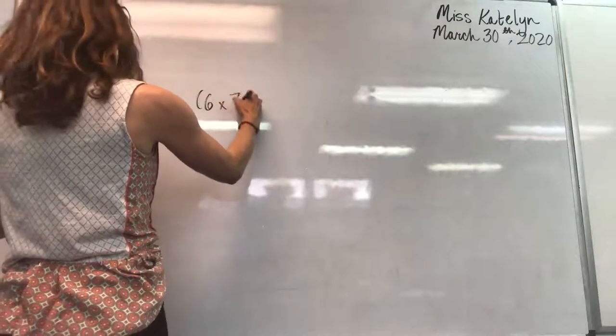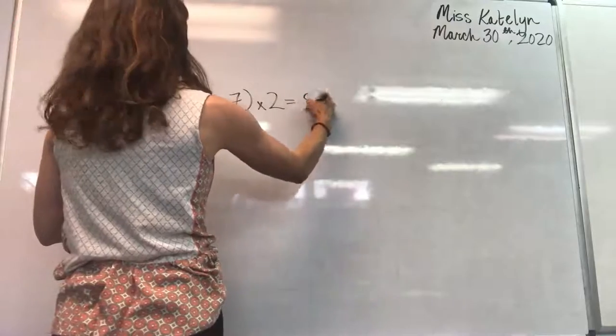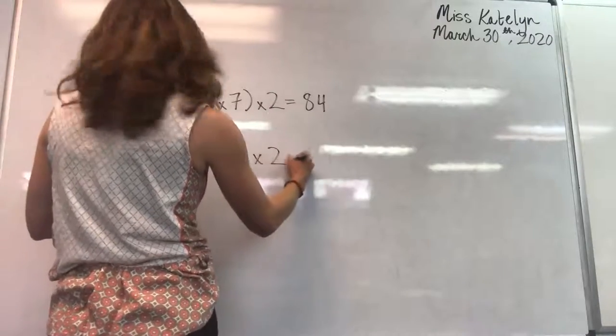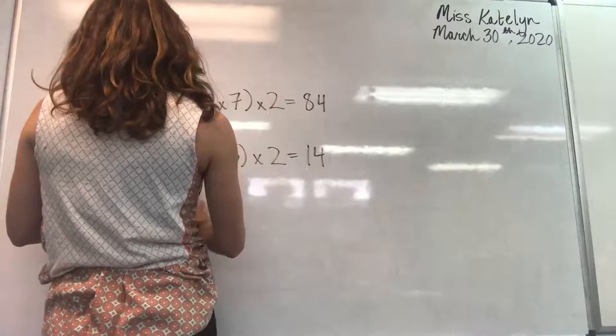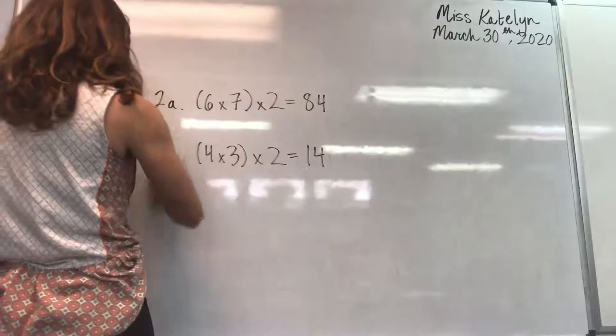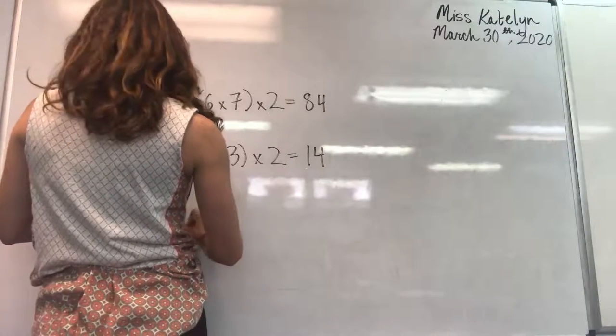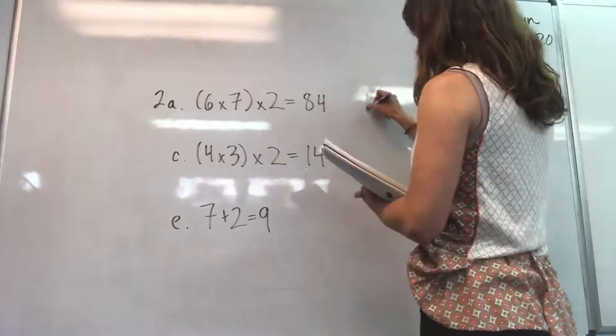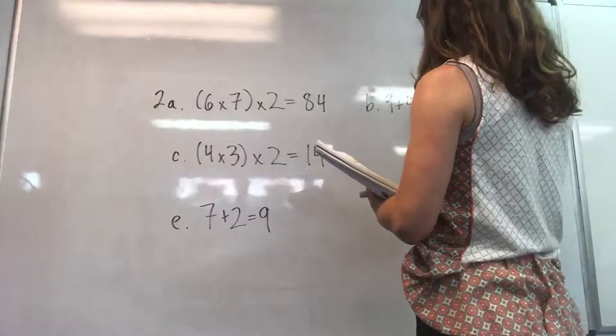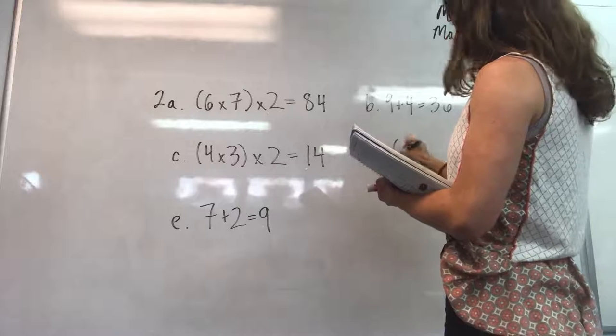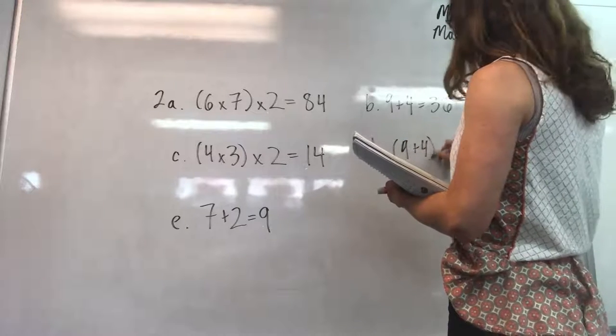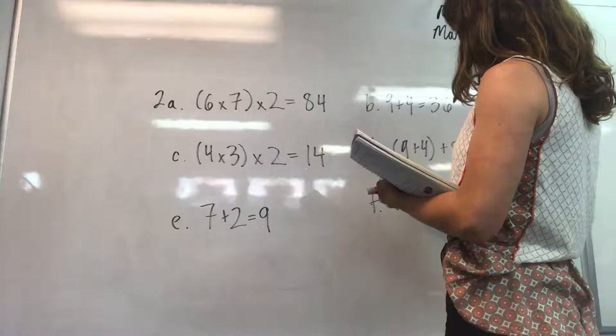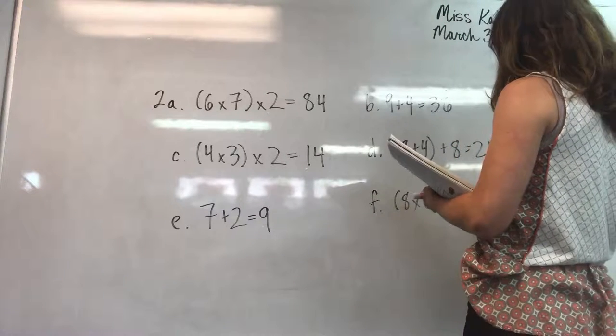Okay, 2A. They have six times seven times two equals 84, and B is four times three times two equals 14, and C, and E, seven plus two equals nine. This is B, nine plus four equals 36. D, nine plus four in parentheses plus eight equals 21. And F, eight times two times three equals 38.